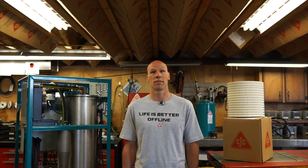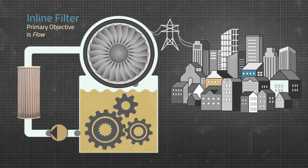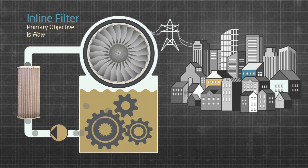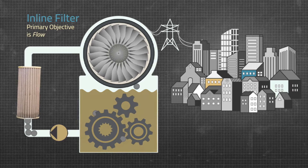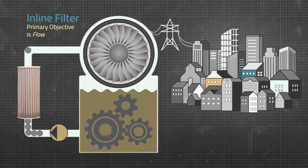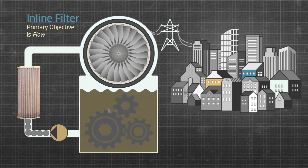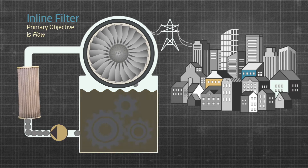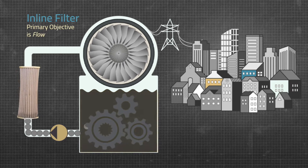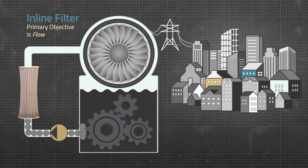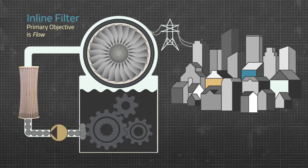It's called a filter. However, an inline filter's primary requirement is surprisingly not filtration, but rather flow. If that filter ever impedes the oil from reaching the rest of the system, it runs the risk of preventing proper lubrication or robbing power downstream.